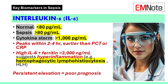Interleukin-6 binds to membrane-bound receptors, driving the acute phase response, and activates endothelial injury pathways through soluble receptors. It peaks 2 to 4 hours post-infection, earlier than procalcitonin or C-reactive protein. Clinically, interleukin-6 levels greater than 1,000 picograms per milliliter combined with ferritin levels greater than 3,000 nanograms per milliliter suggests secondary hemophagocytic lymphohistiocytosis. Persistent elevation of interleukin-6 predicts poor prognosis.